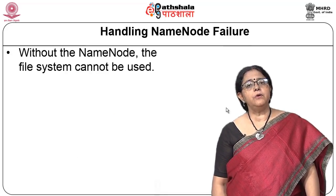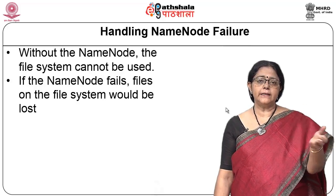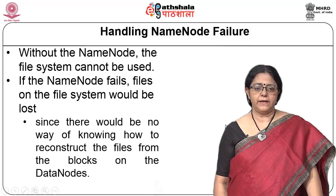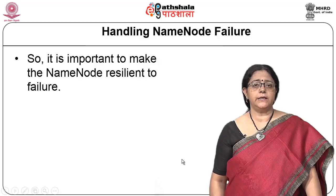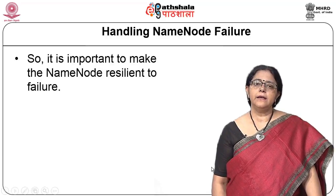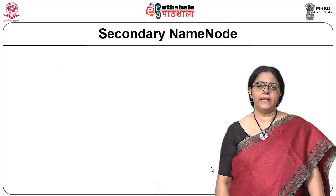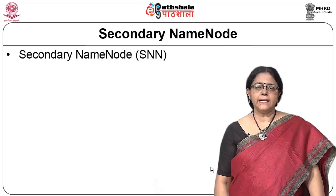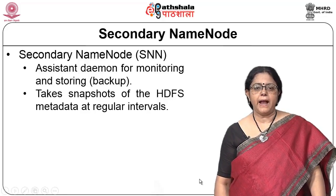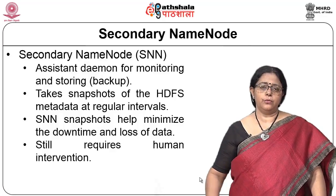If the name node crashes, the file system cannot be used because all information about files, blocks, and their locations would be lost. It is very important to ensure the name node is safe. Since it is also commodity hardware, it will eventually fail. The secondary name node handles this: it runs in the background, monitoring and creating necessary backups, taking snapshots and creating new snapshots of the environment.